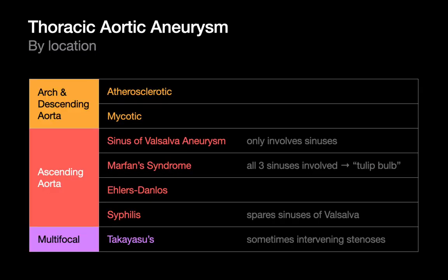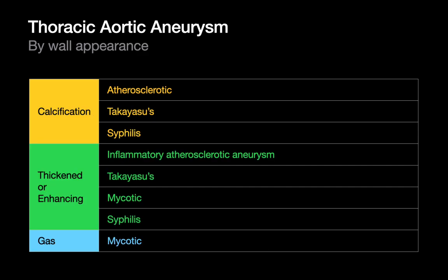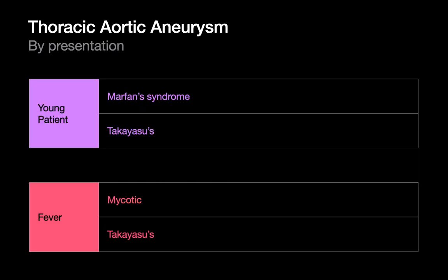Although atherosclerosis is the most common cause of a thoracic aortic aneurysm, it's not the only cause. Sometimes the location of a thoracic aortic aneurysm can give us hints to the cause. The appearance of the wall — such as thickened, enhancing aortic walls — may suggest a more inflammatory cause. A patient's presentation can also provide hints; for example, a thoracic aortic aneurysm in a young patient would favor disorders like Marfan's or Takayasu's over atherosclerosis.